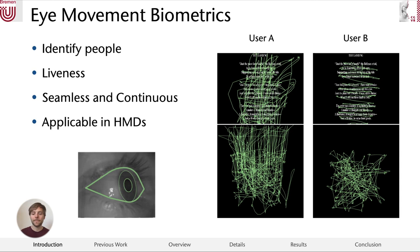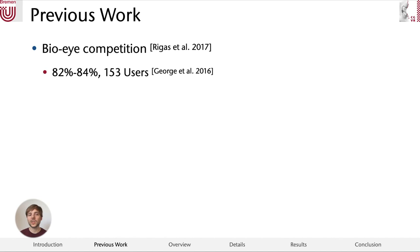Previous work can be split into three major areas. First, there was the BioEye competition by Rigas et al. in 2017, where seven participants competed to achieve the highest accuracy in identifying 153 users solely by gaze patterns. This was task-dependent in that the users were either reading a poem or following a random dot. The winning entry by George et al. achieved an astonishing accuracy of 82 to 84 percent.